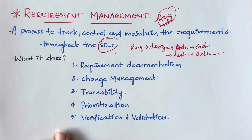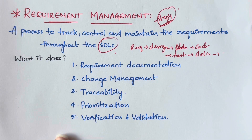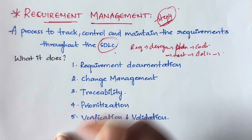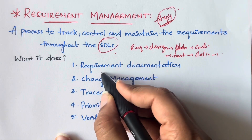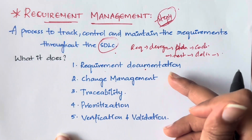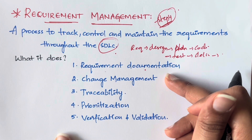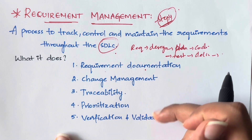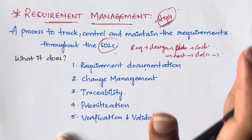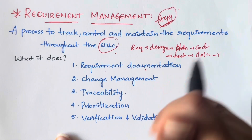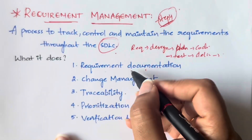So that is the overview of requirement management. What it does is: first, requirement documentation; second, managing changes; third, traceability; fourth, prioritization; and fifth, verification and validation. I'll explain each of these.